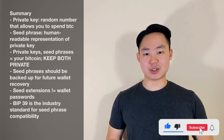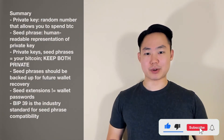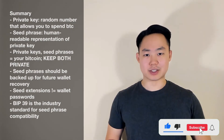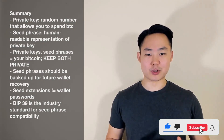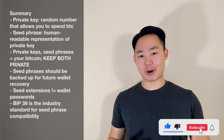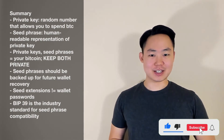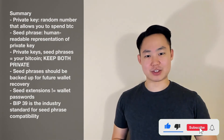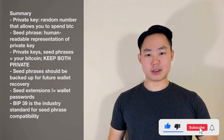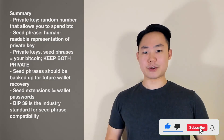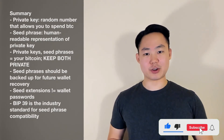To summarize: a private key is a random number that proves you own Bitcoin and allows you to spend that Bitcoin. A seed phrase is an ordered sequence of words that represent a random number — in this case, your private key. Both private keys and seed phrases should be kept private. Think of both as your Bitcoin. If you lose your seed or private key, you lose your Bitcoin.